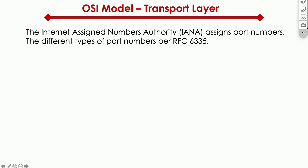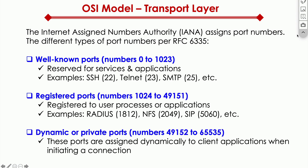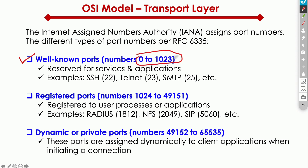There is an organization called IANA — the Internet Assigned Numbers Authority — and they have RFC 6335 that defines the different ports available. In total, we have 65,535 ports available. First, we have well-known ports: 0 through 1023, which include SSH port 22, Telnet port 23, and SMTP port 25. Then we have registered ports, used by services like RADIUS, Network File System, and SIP, ranging from 1024 to 49,151.